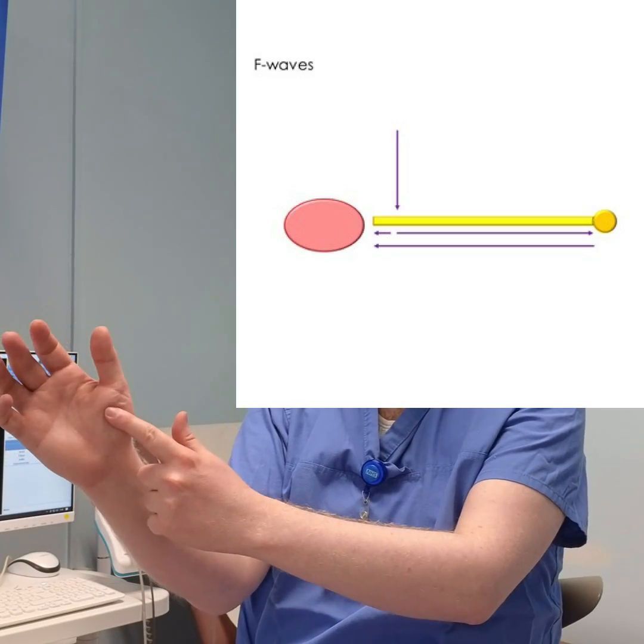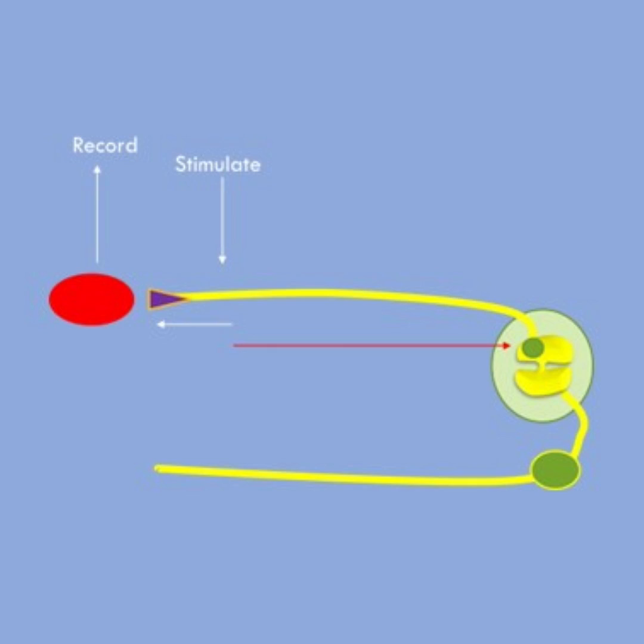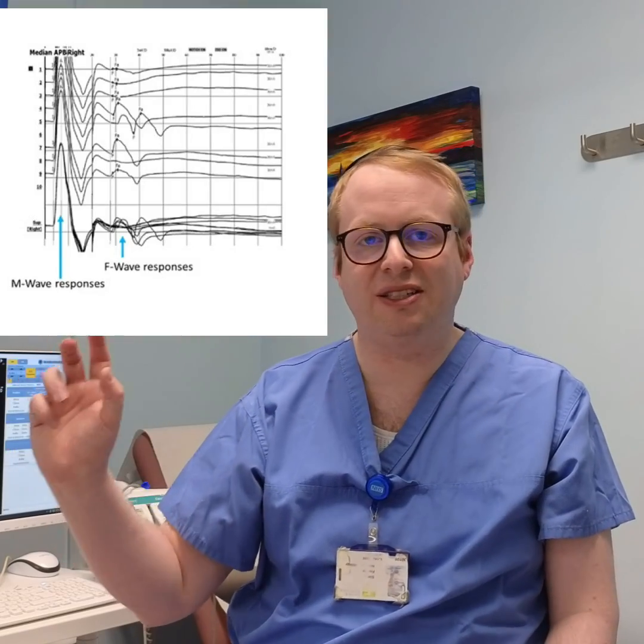If I do this electrically, however, and I stimulate the median nerve down here, the signal will not only pass across the APB muscle, but also some of that signal will spread upwards all the way to its originating cell — the anterior horn cell — which will be at the lower cervical C8/T1 level. That's really useful because we can actually look at the entirety of the nerve all the way up to its originating cell.